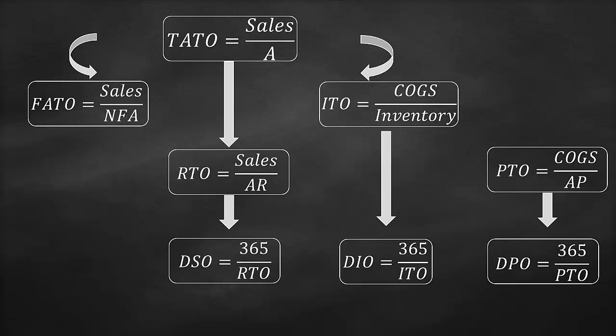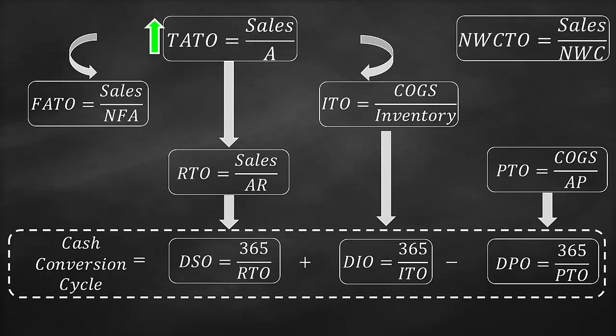The days sales outstanding plus the days inventory outstanding minus the days payable outstanding gives us the cash conversion cycle. Finally, we have the net working capital turnover ratio, which is the sales divided by the net working capital.